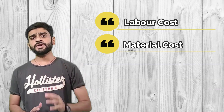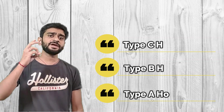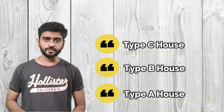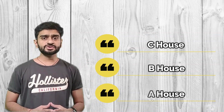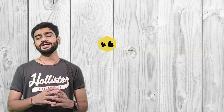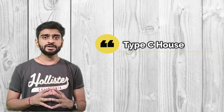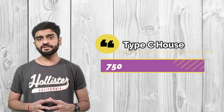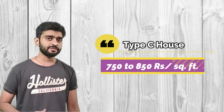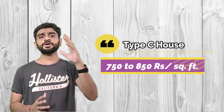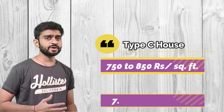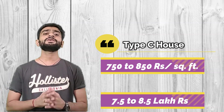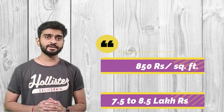First we will see what are the types of houses. In general there are three categories: Class C, Class B, and Class A. The overall construction cost of a Class C house per square feet, including labor and material, will be about 750 to 850 rupees per square feet. So the total construction cost of our 1000 square feet house will be 7.5 to 8.5 lakh.